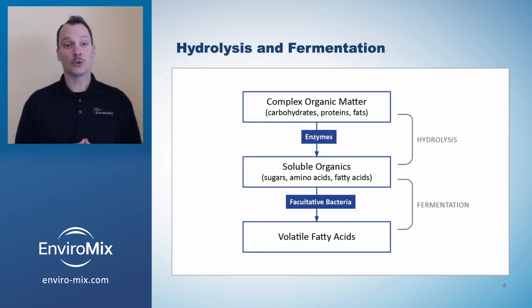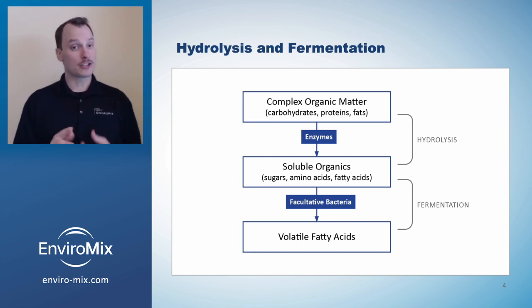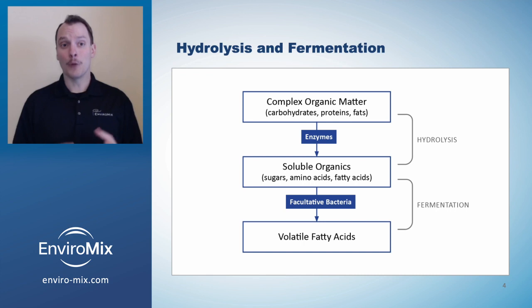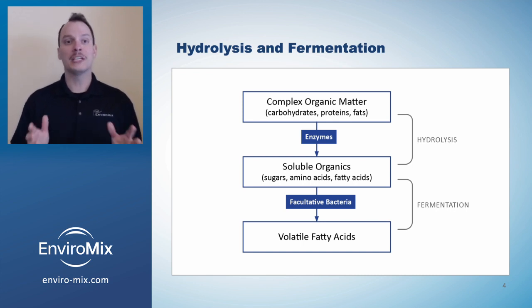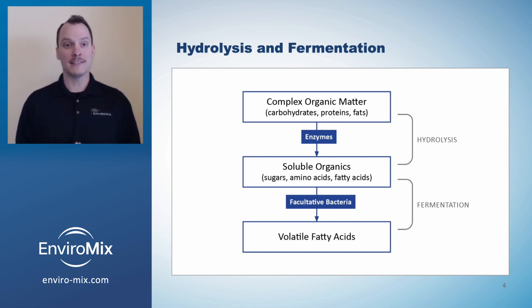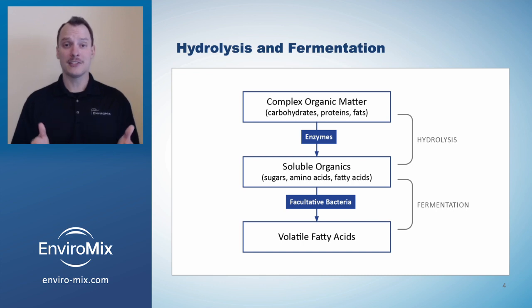VFA is created through the processes of hydrolysis and fermentation. Complex organic matter such as carbohydrates, proteins, and fats are broken down by enzymes to create soluble — or what we might otherwise call readily biodegradable — organics such as sugars and acids. Facultative bacteria then convert soluble organics to VFA.